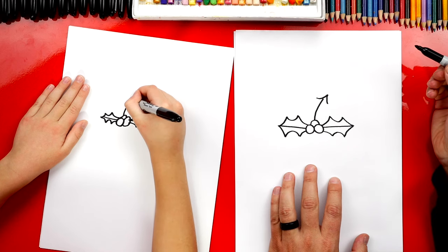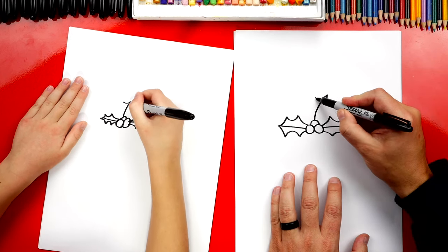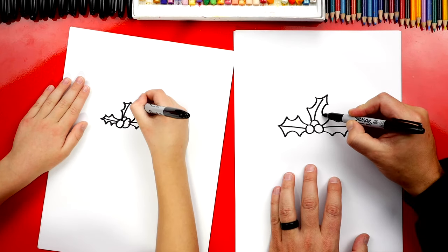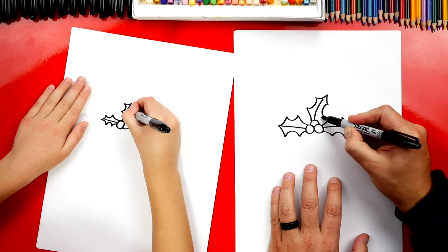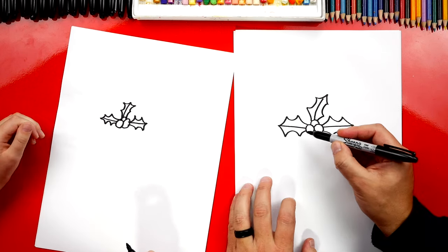Draw a curved arrow at the top. Then we're gonna draw a sideways U and then connect it in. And another sideways U going the other direction and then connect that one in. We did it. There's our holly. Now let's draw the pudding.